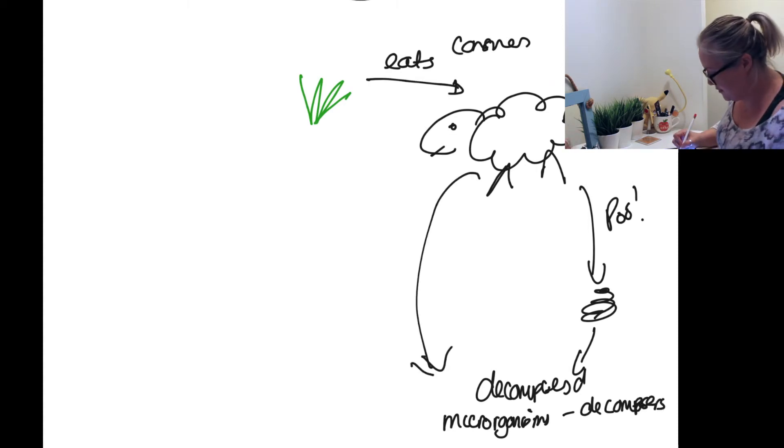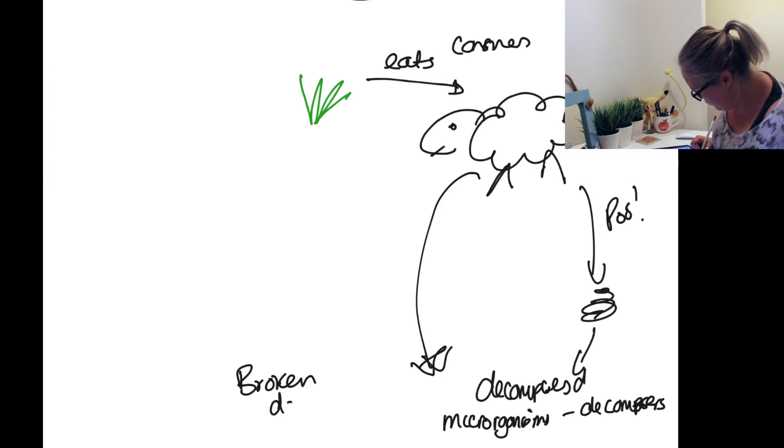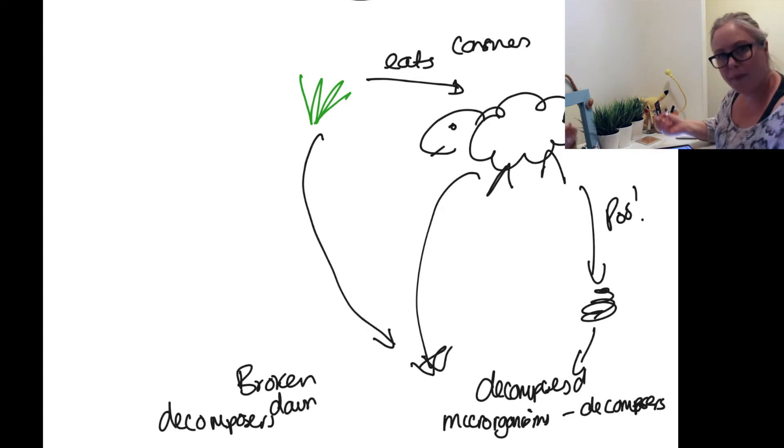When our sheep dies, that will also be decomposed, broken down by these decomposers. Our grass, our plants, they will also die and be broken down by these decomposers.